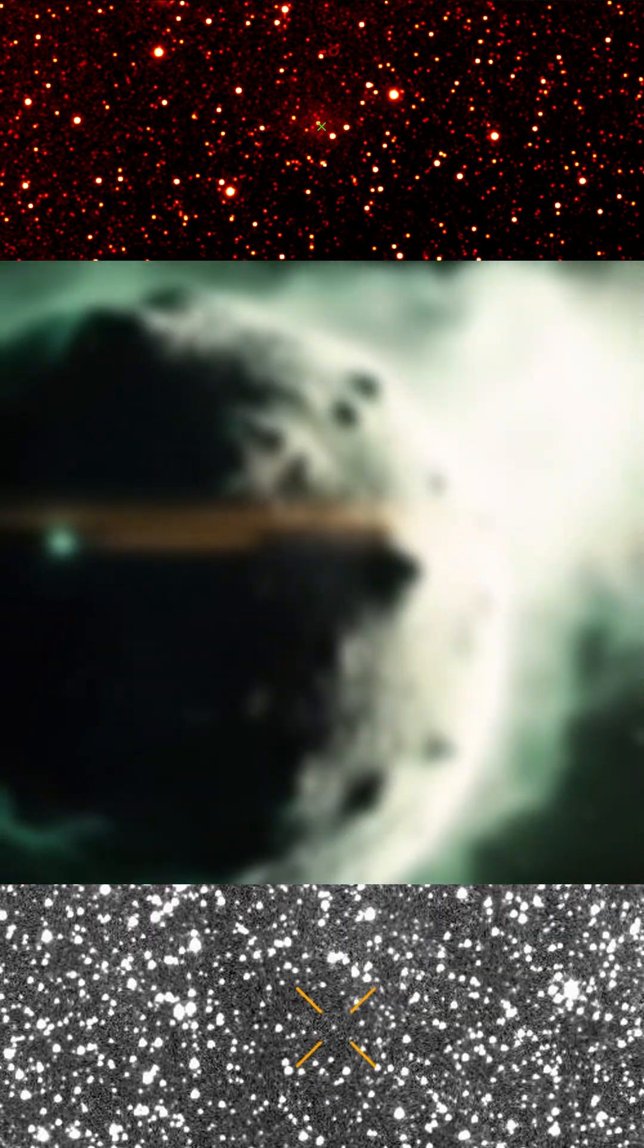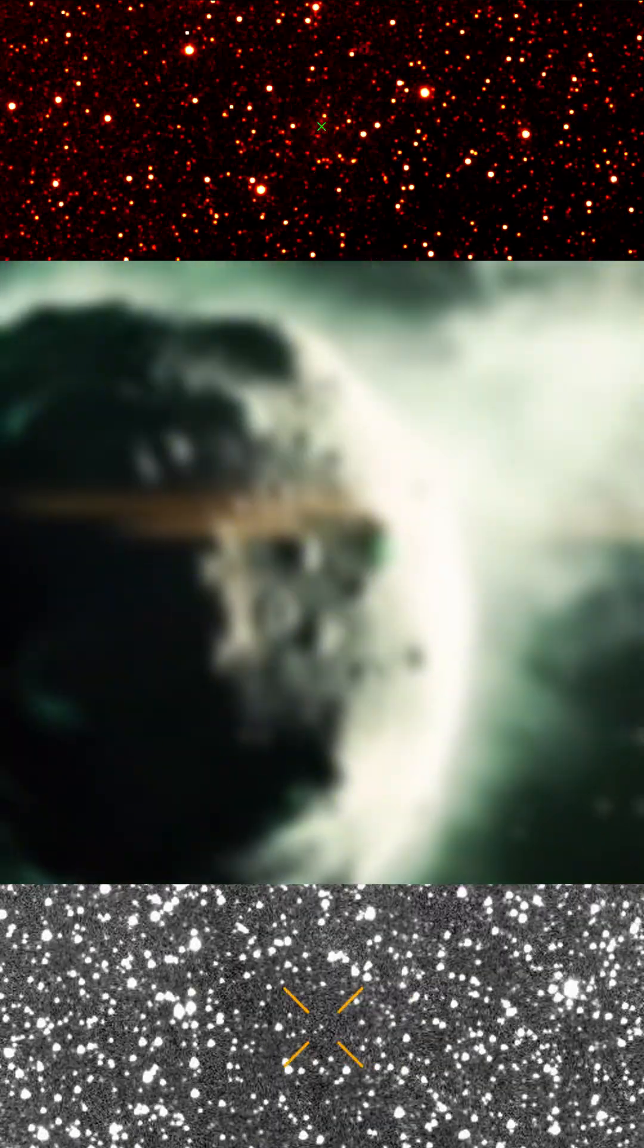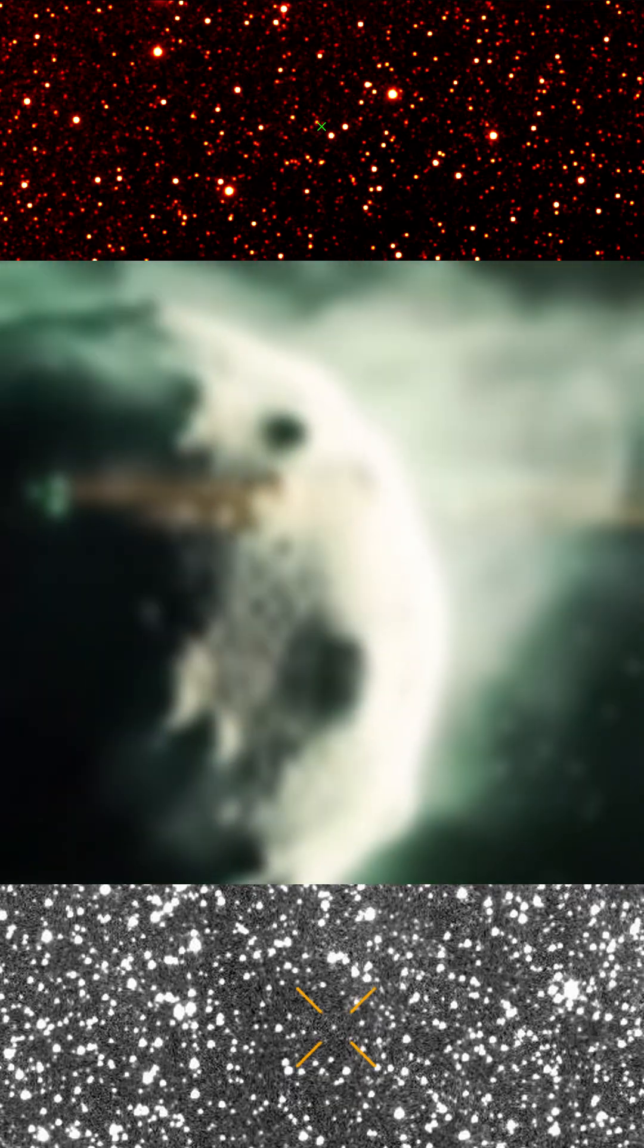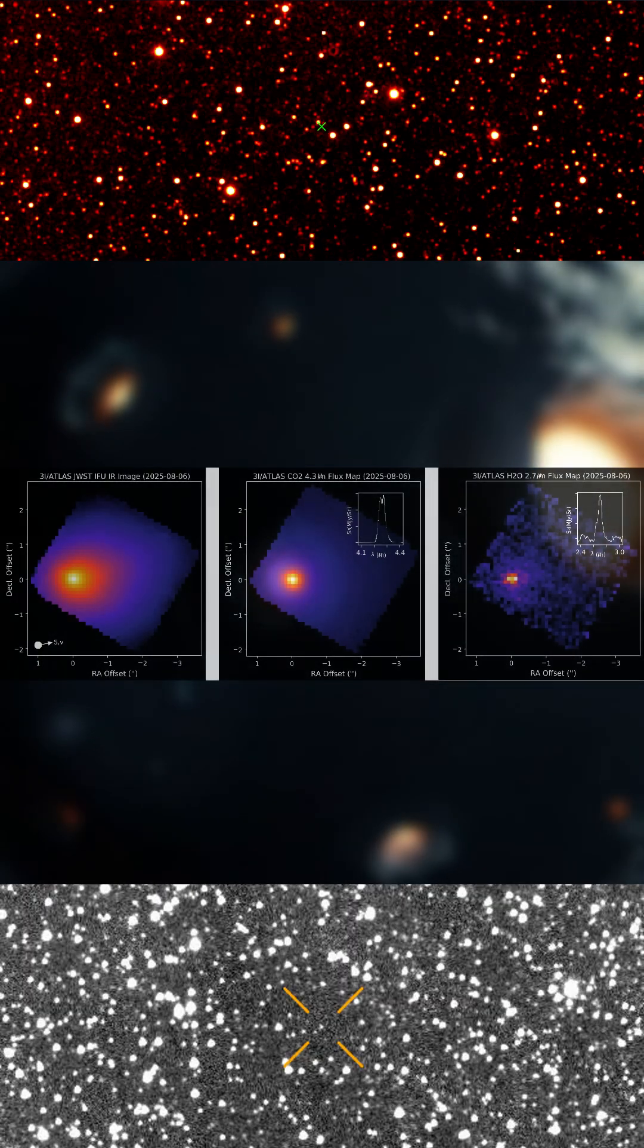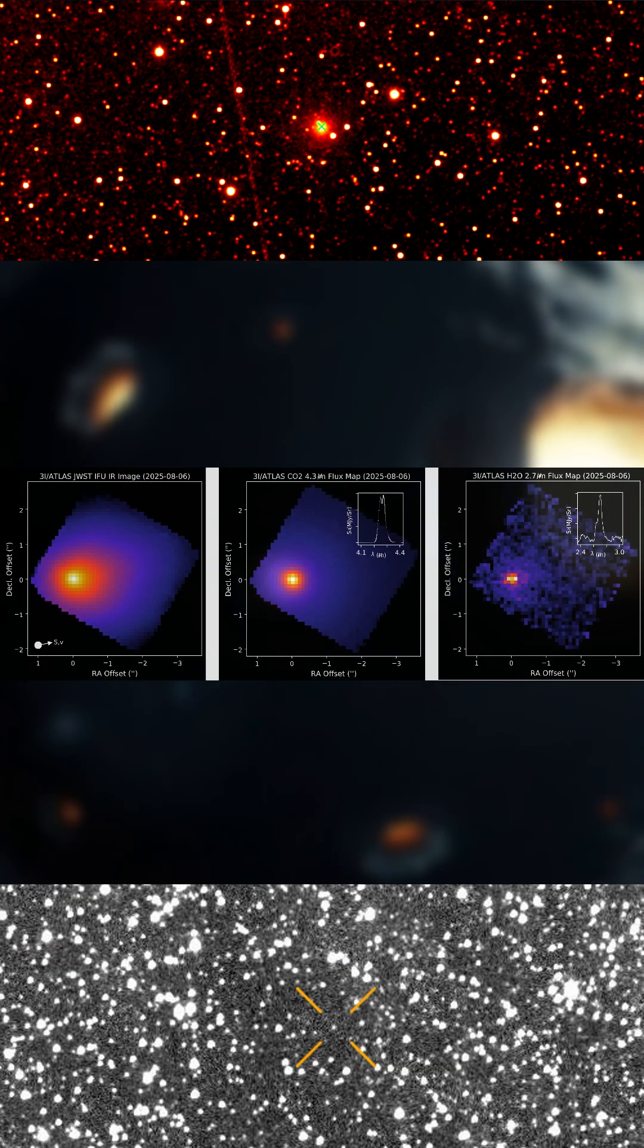Last week we reported on early measurements of C/2023 A3 Atlas and the debate over its unusual activity. The James Webb Space Telescope has now delivered its first spectroscopic data, and the results define how different this object really is.